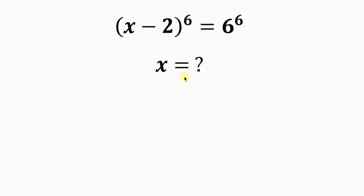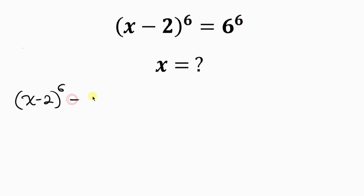Find the values of x for which x minus 2, all raised to the 6, is equal to 6 to the 6. Our first step is to move 6 to the 6 to the left hand side, so that we have x minus 2 all raised to the 6, minus 6 to the 6, equal to 0.